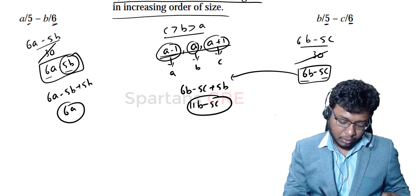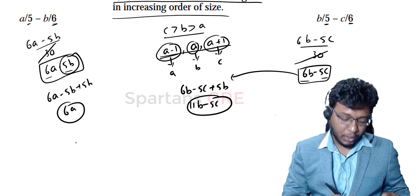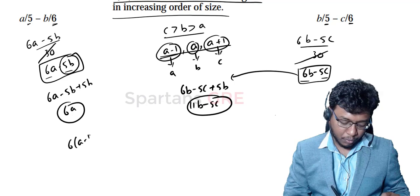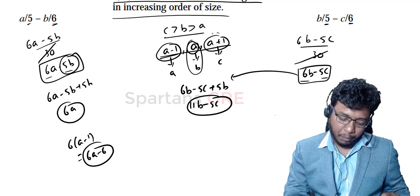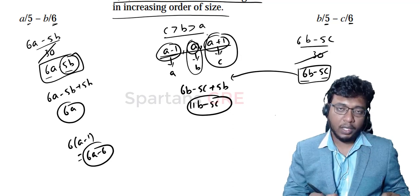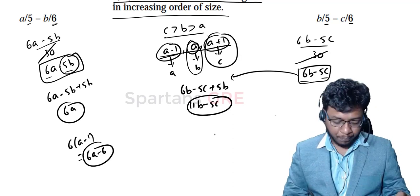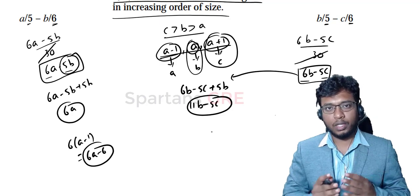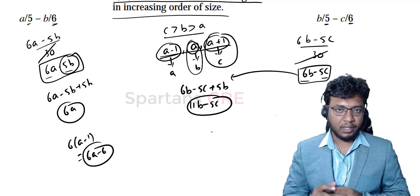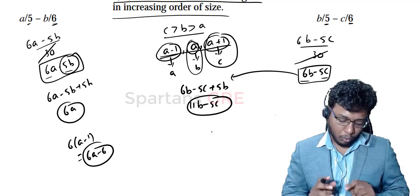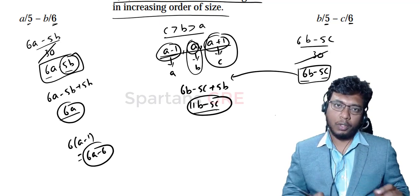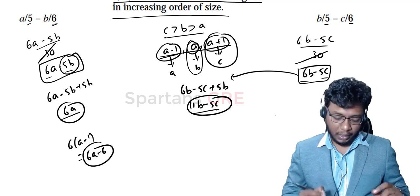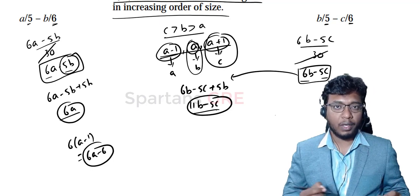Now I substitute the values. A means A−1, so quantity A becomes 6(A−1) = 6A − 6. For quantity B, I put B = A and C = A+1. I'm doing this to reduce A, B, C — originally three variables — down to a single variable A.